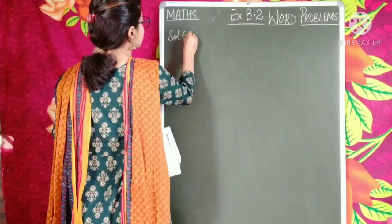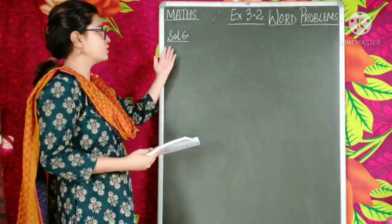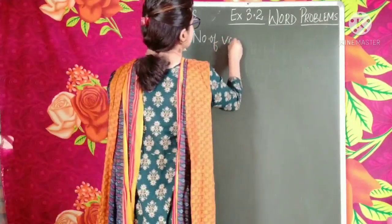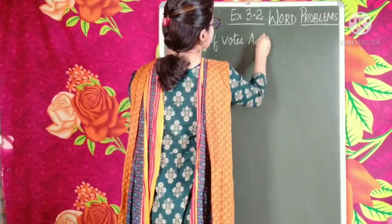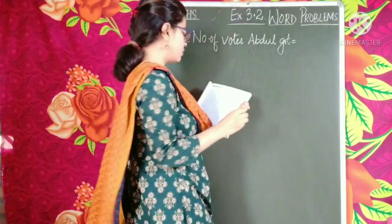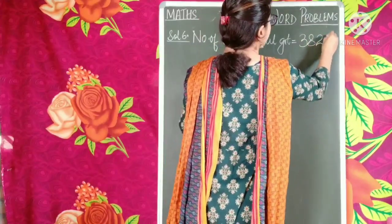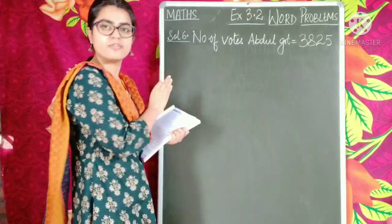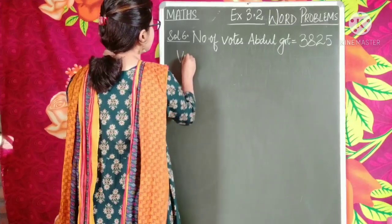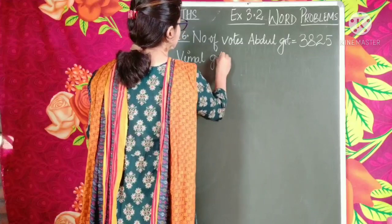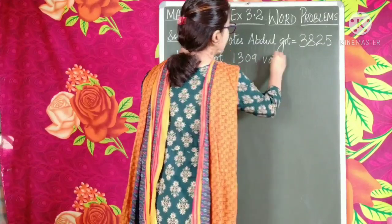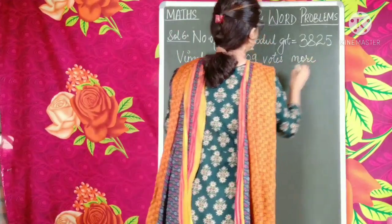I am not writing the question, I am simply starting off with the statements. Solution 6. The first statement: number of votes Abdul got is 3,825. This is the first information given, so we make the statement out of it. The next information: Vimal got 1,309 votes more than Abdul.